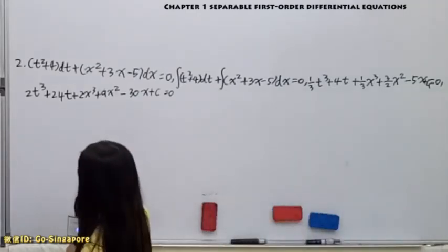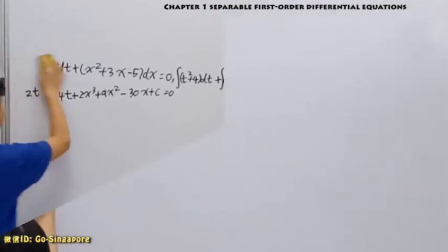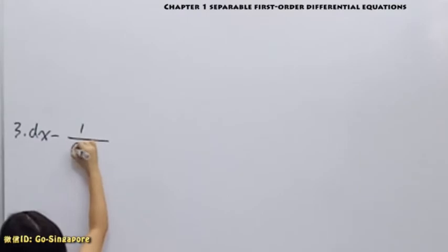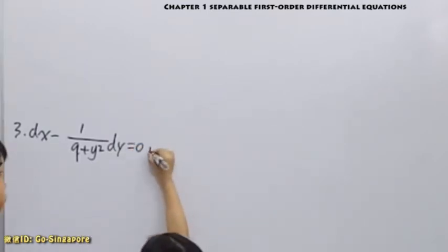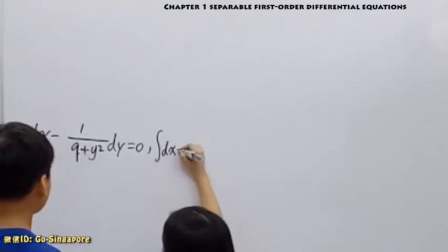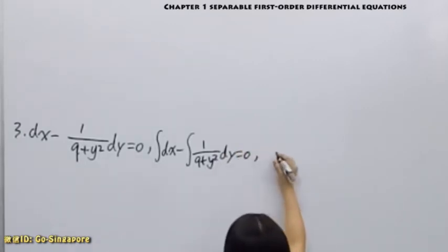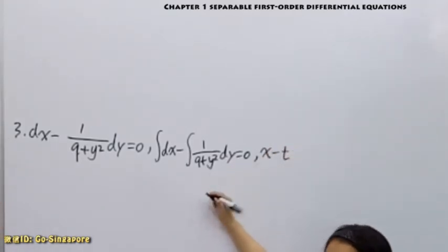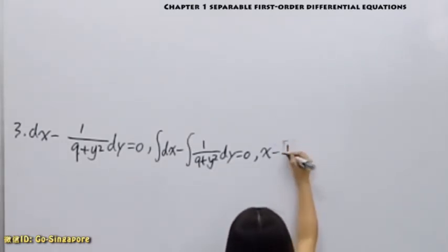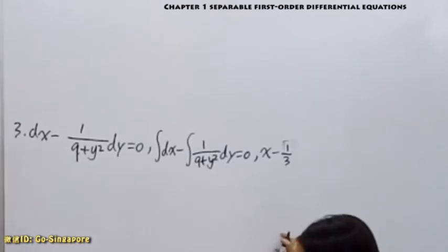And this is dx minus 1 over 9 plus y squared dy, and this equals 0. Same thing, both sides integrate. This could be a tan or a cot tan. And write down the formula, which is the basic integration formulae, right? Yes, you can write it up there.